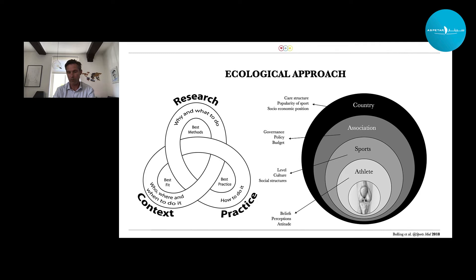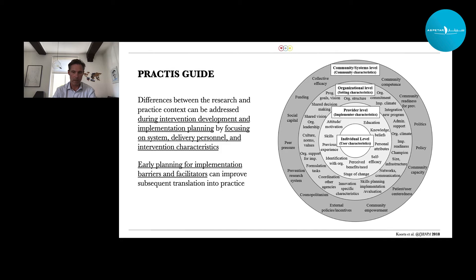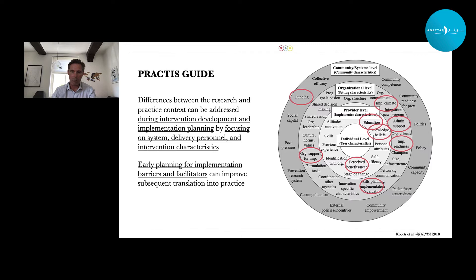This paper was published in 2018, and in the same year from implementation sciences a new guideline came out that also took a more ecological approach. This guideline acknowledged that there is a difference between research and practical context, and that this needs to be addressed not after intervention development, but during it — not after step four in the TRIP model, but at step three, at the moment we develop interventions. We need to focus on the system, the personnel who deliver it, and the characteristics of the intervention. Basically, we need to take context into account. If we look at what we're doing in implementation right now, we only focus on certain aspects of this holistic ecological framework — so we're missing a lot of bang for our buck.